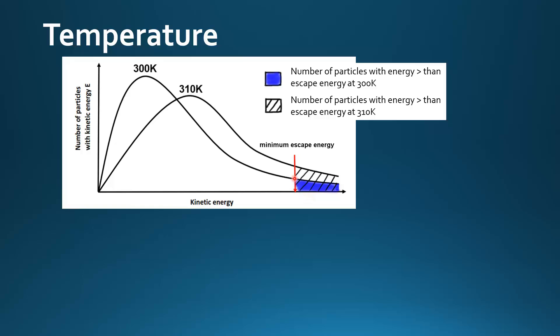As you can see, at the higher temperature of 310K, a greater proportion of particles have energy greater than the minimum escape energy. This means as temperature increases, more particles are able to leave the liquid phase and enter the vapor phase, so the rate of evaporation increases.